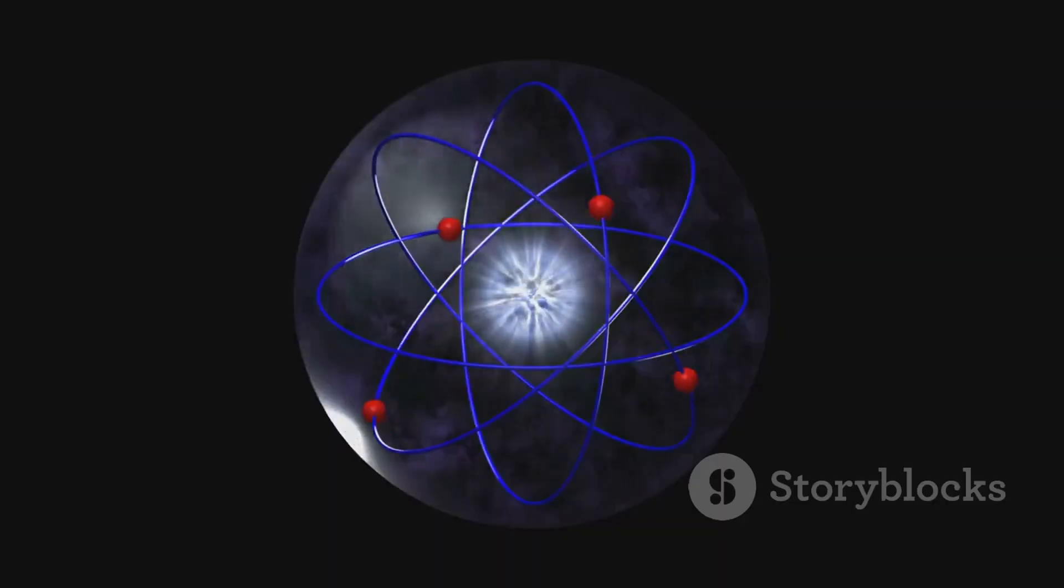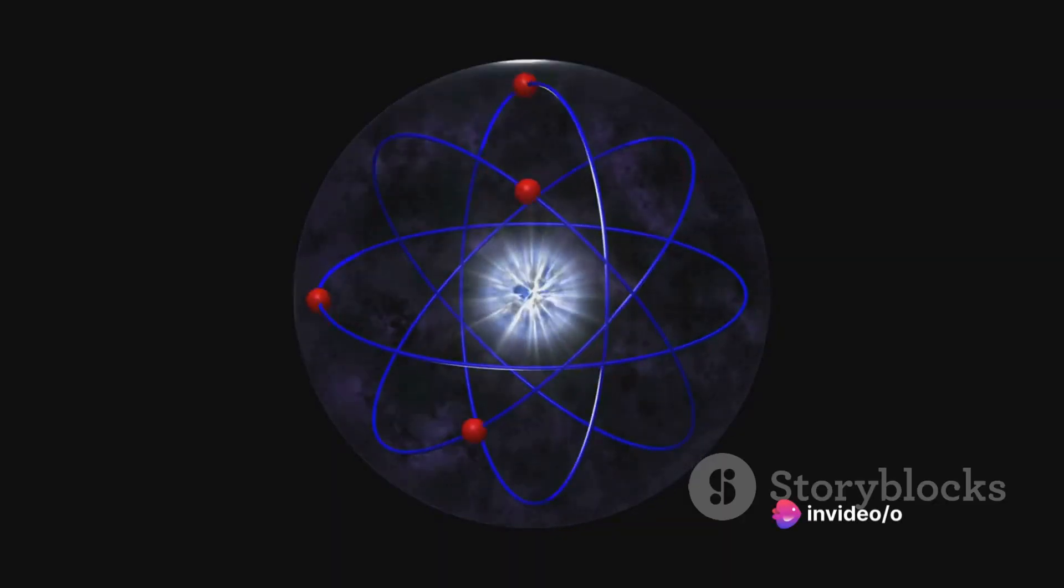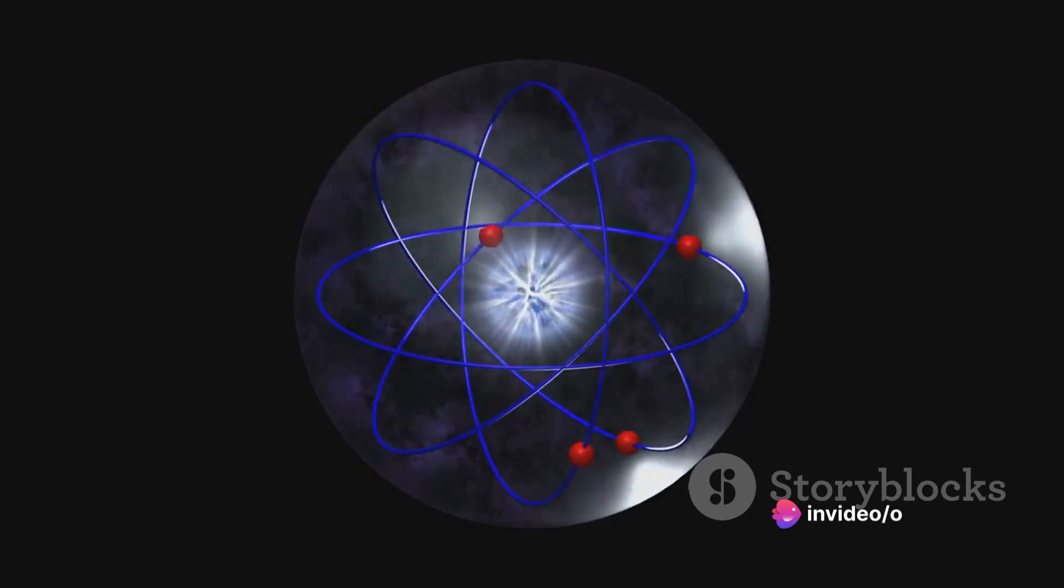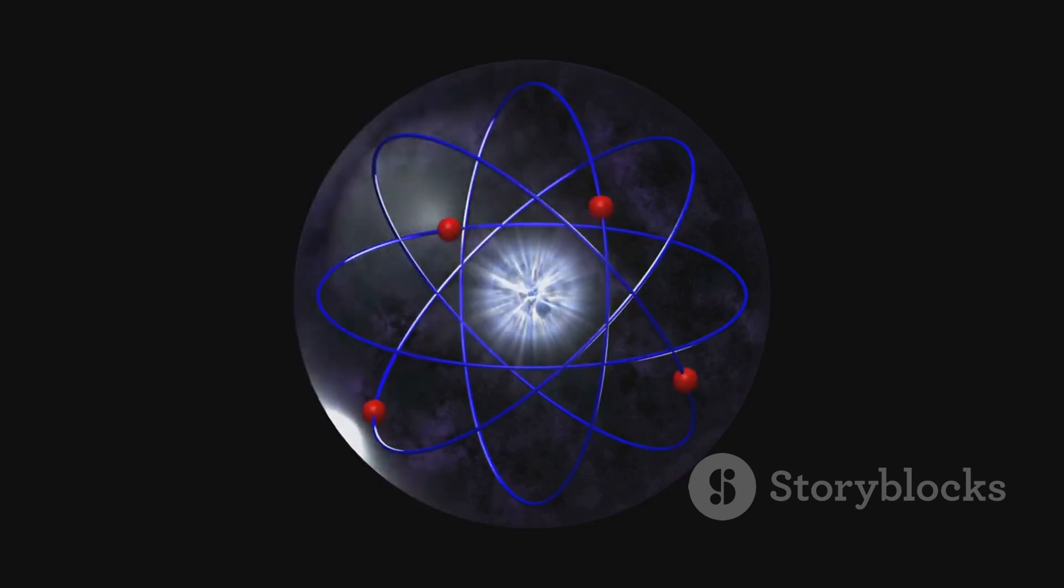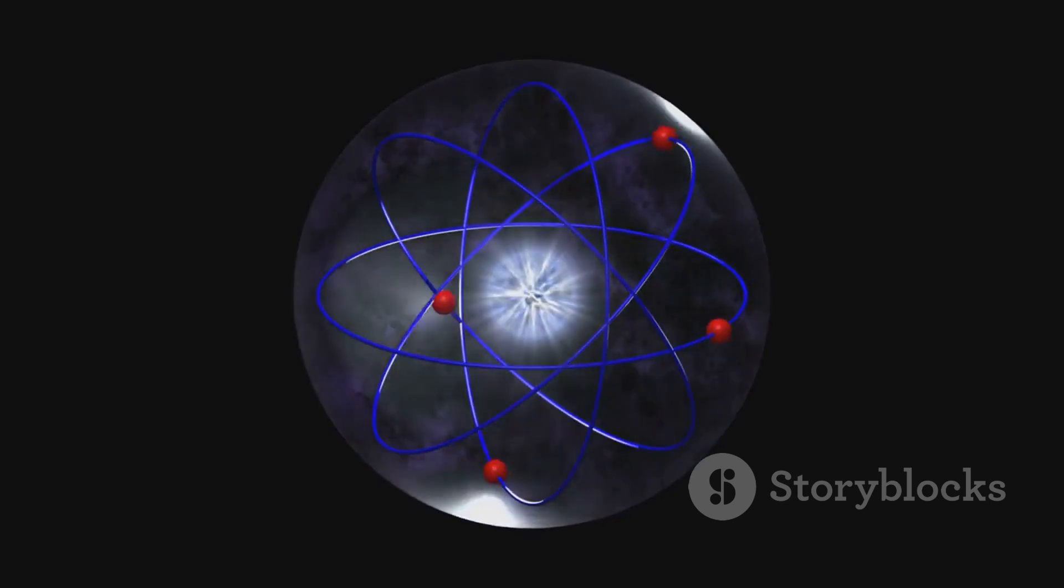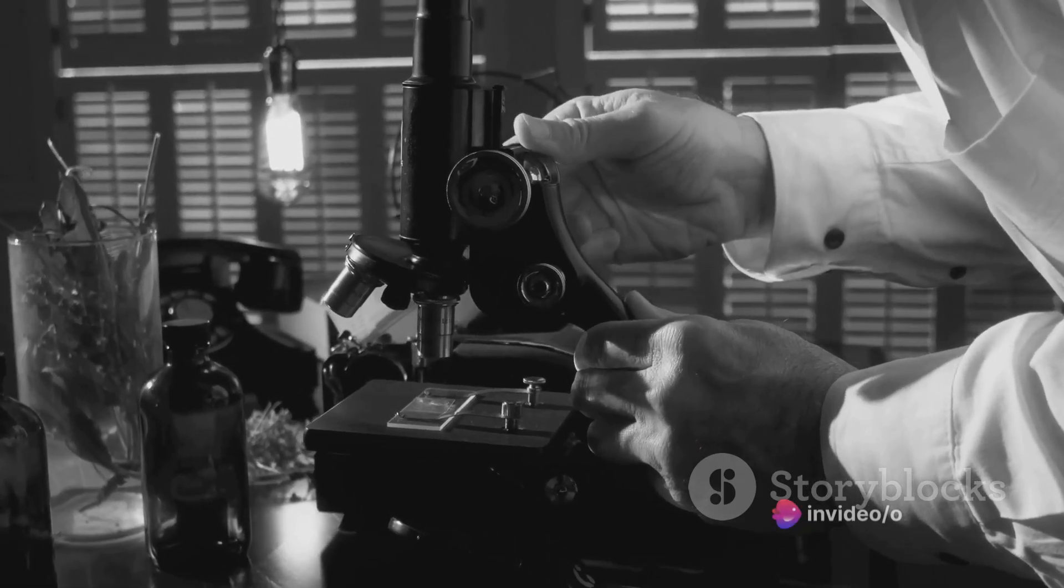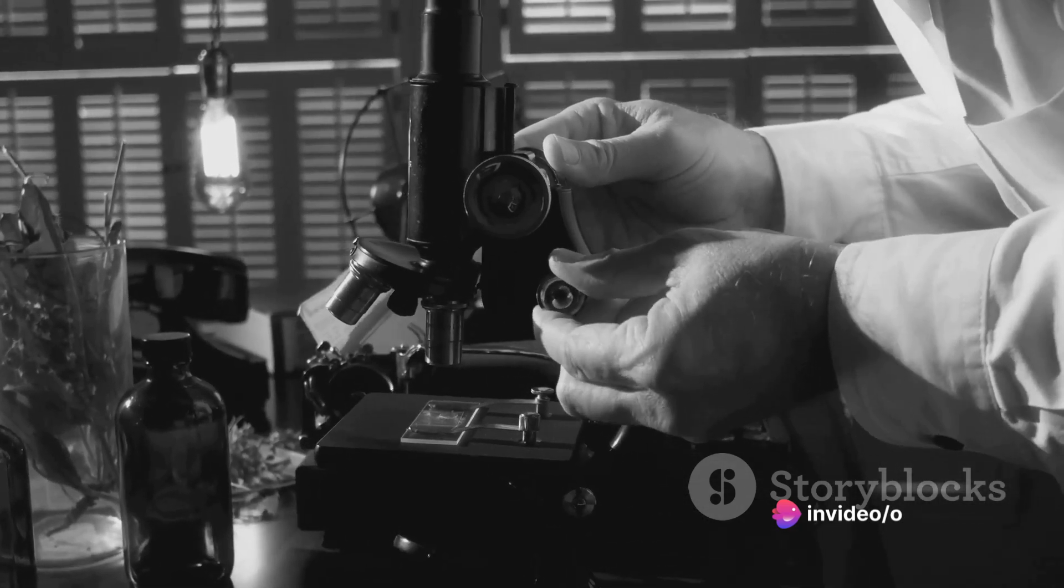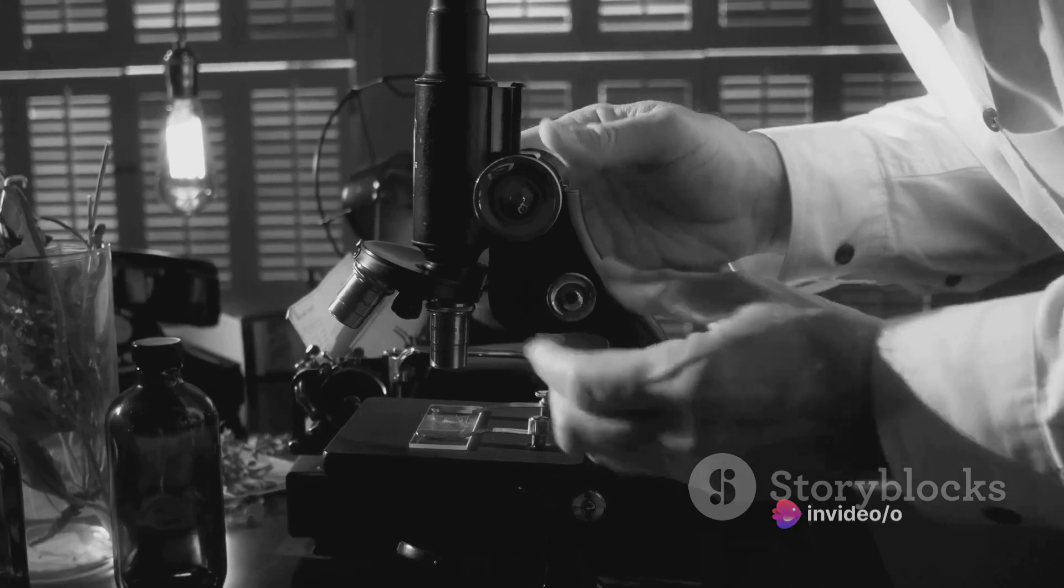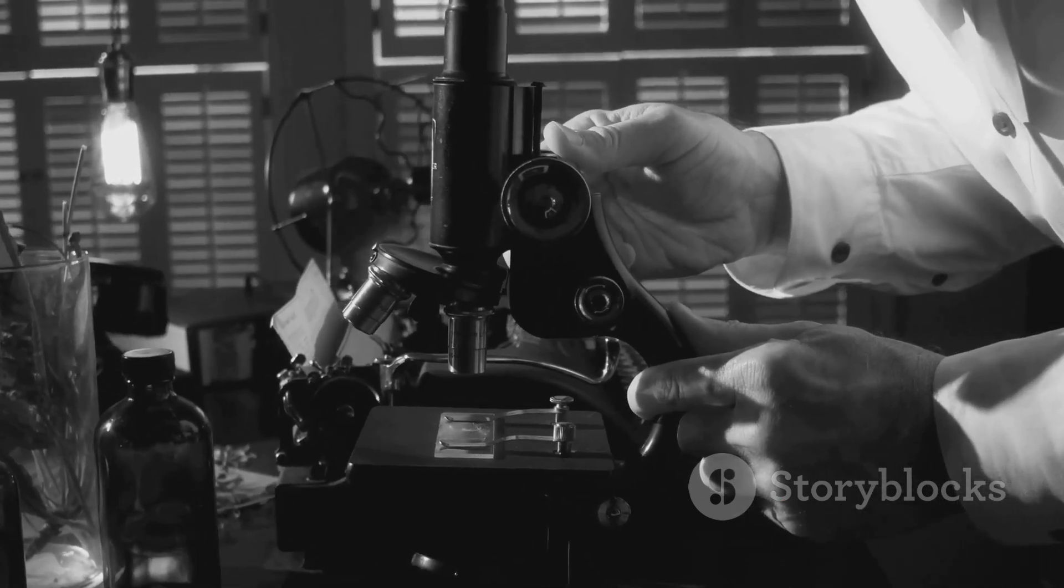Niels Bohr, the champion of the Copenhagen interpretation, responded to Einstein's objections with a nuanced argument. He emphasized the role of complementarity and the limitations of our classical intuition in understanding quantum phenomena. Bohr maintained that quantum mechanics, while counterintuitive from a classical perspective, provides an accurate description of the microscopic world and consistently yields experimentally verifiable results.